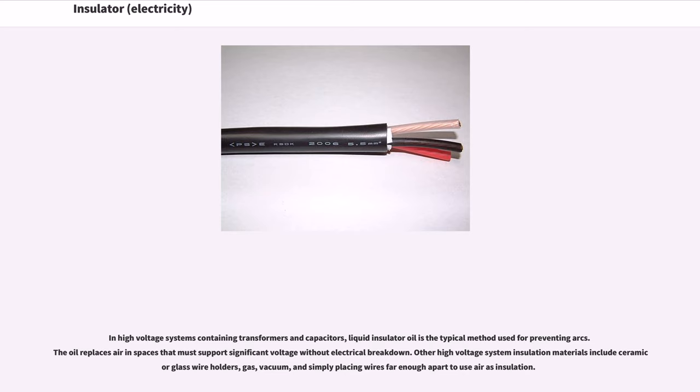In high-voltage systems containing transformers and capacitors, liquid insulator oil is the typical method used for preventing arcs. The oil replaces air in spaces that must support significant voltage without electrical breakdown. Other high-voltage system insulation materials include ceramic or glass wire holders, gas, vacuum, and simply placing wires far enough apart to use air as insulation.